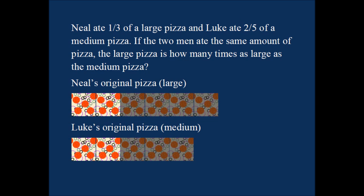Here's the picture. The large pizza that Neil ate from must have had one, two, three, four, five, six slices. And the medium pizza that Luke had some slices from must have had about one, two, three, four, five slices.